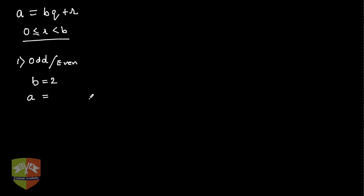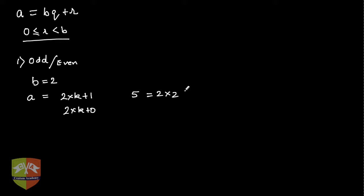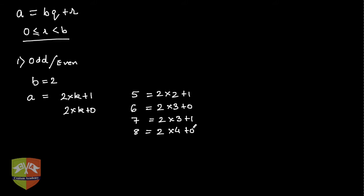So any number a can be expressed as 2k plus 1 or 2k plus 0. For example, 5 can be expressed as 2 into 2 plus 1, and 6 is 2 into 3 plus 0, then 7 is 2 into 3 plus 1, and 8 is 2 into 4 plus 0.